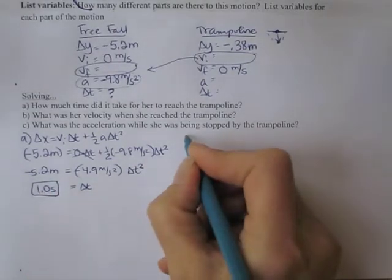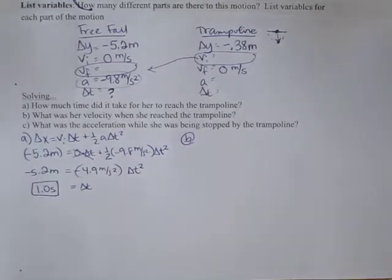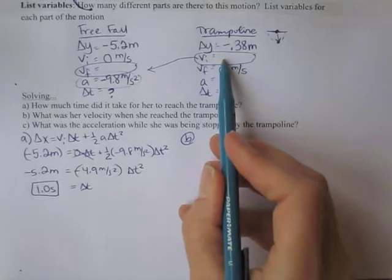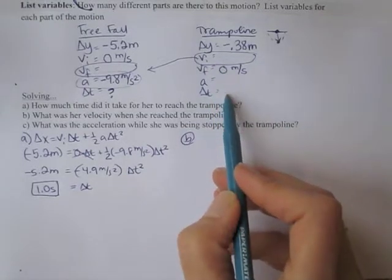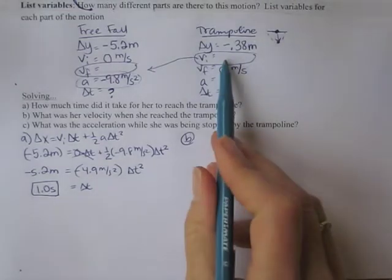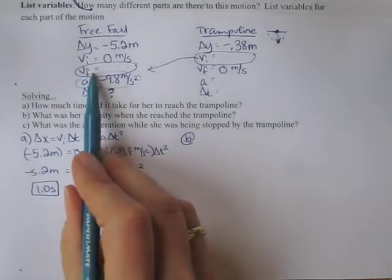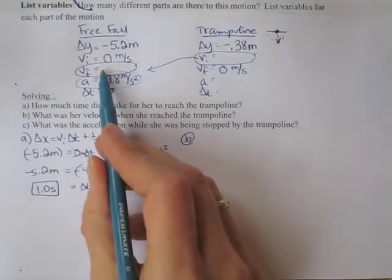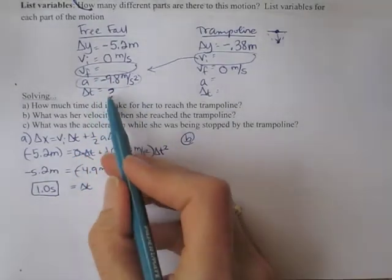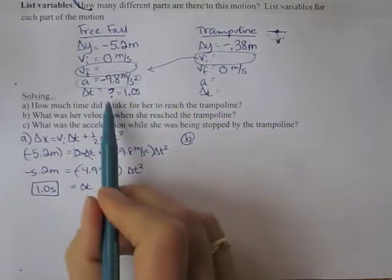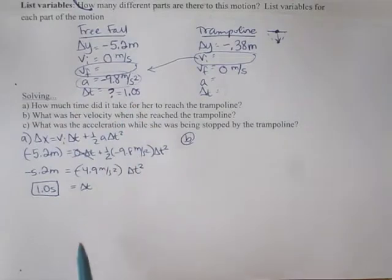Part B. What was her velocity when she reached the trampoline? So that would be the initial velocity of the trampoline motion, but we don't have enough variables here to use this part of the motion to find that velocity. But it's also the final velocity of the free fall part of the motion. So you can use, now that you know the time, you can actually use several different equations to find this.